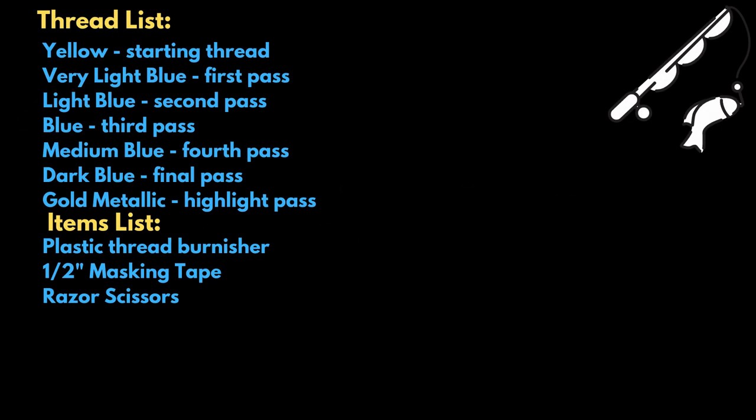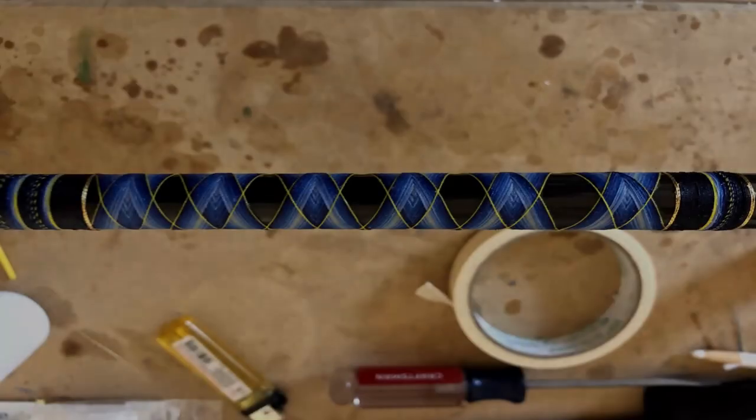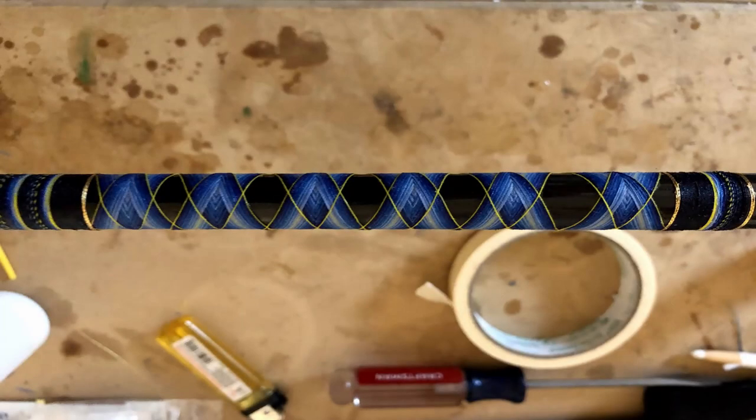When I go through the cross wrap here I start off with a yellow thread. It gives me a good starting point and it stands out so it's not difficult to see. Then for my first pass I use what I'm calling a very light blue because I don't know the actual color number since the tag on the spool is no longer there. Then I go to a light blue followed by a regular medium blue and then a dark blue.